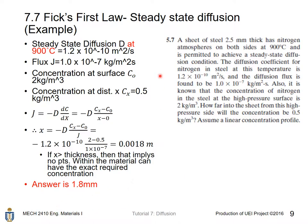One discussion can be made: if the x found is bigger than the actual thickness of this piece of steel, that implies no points within that piece of steel can have the exact required concentration based on the calculation shown here.